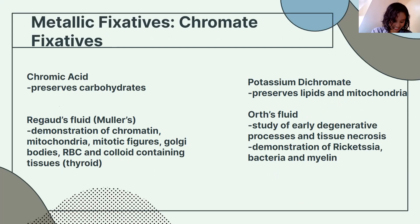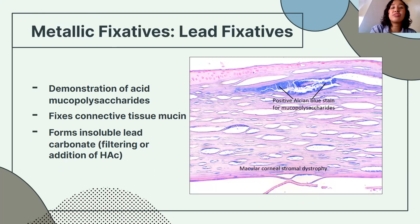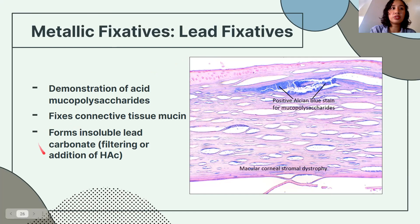Lead fixatives are used for acid mucopolysaccharides — such as those in corneal biopsies — which are then stained with Alcian blue stain. However, lead fixatives form an insoluble lead carbonate precipitate which can be removed by filtering or adding acetic acid.